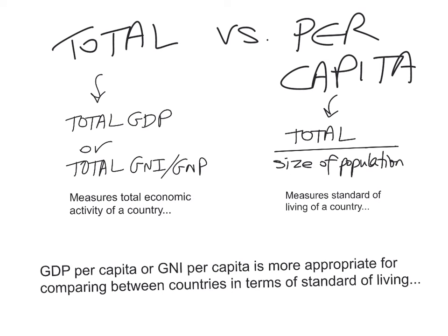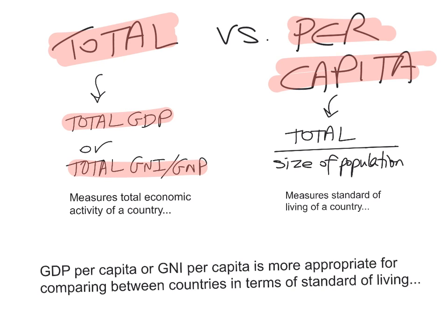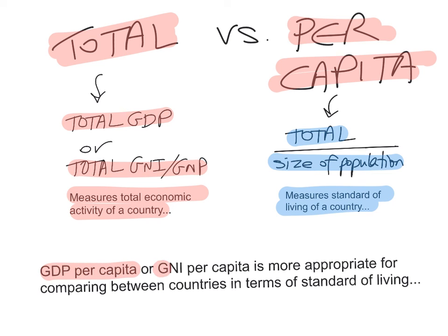The last thing we need to distinguish in this unit is the difference between total GDP and GDP per capita. Total GDP or total GNI measures the total economic activity of a country, while per capita GDP or GNI takes that total and divides it by the size of the population — so it measures the GDP per member of the population, and the standard of living. Note: it is 'per capita,' not 'per capital' with an L at the end — a very common mistake among economics students. GDP per capita or GNI per capita is more appropriate for comparing between countries in terms of standard of living. The difference between nominal and real GDP makes it easier to compare over time; the difference between total and per capita GDP makes it easier to compare between countries.